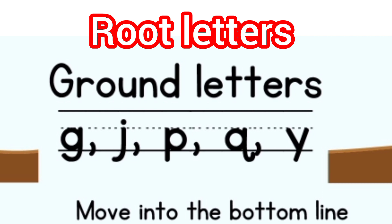Now let's move towards root letters. Root letters go below the bottom line — they are written on the lower 3 lines of the 4-line notebook. There are 5 root letters: g, j, p, q, y.